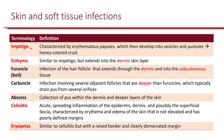Impetigo is characterized by erythematous papules which then develop into vesicles and pustules, eventually forming a honey-colored crust, and this is essentially in the epidermis layer. Ecthyma is similar to impetigo but extends into the dermis skin layer — it's still in the skin but a bit deeper. A furuncle or boil is an infection of the hair follicle that extends through the dermis and into the subcutaneous tissue.